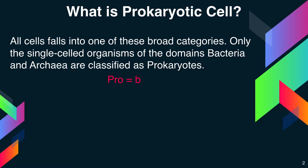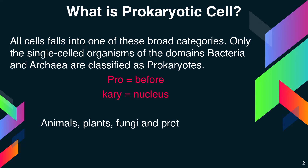Pro means 'before' and karyon means 'nucleus.' Animals, plants, fungi, and protists are all eukaryotes. Eu means 'true' and karyon means 'nucleus.'